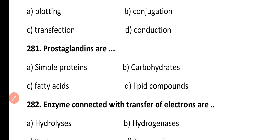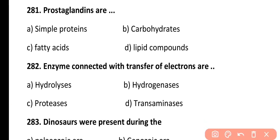Question 281. Prostaglandins are: simple proteins, carbohydrates, fatty acids, or lipid compounds. Correct answer is Option D. Prostaglandins are lipid compounds which are hormone-like in action and are produced at the site of infection or injury.